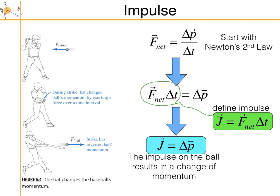A force being applied for a certain amount of time is what we call the impulse. For a constant force, the impulse is just force times the amount of time the force is applied on the object. The impulse applied on the ball results in a change in momentum, and we can solve all kinds of problems using that.